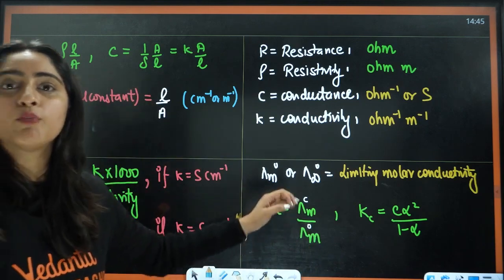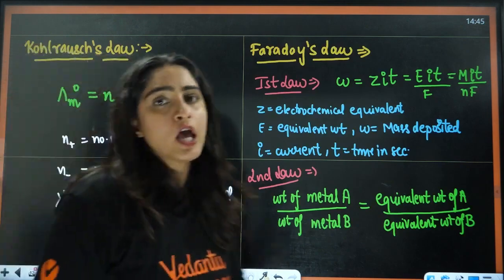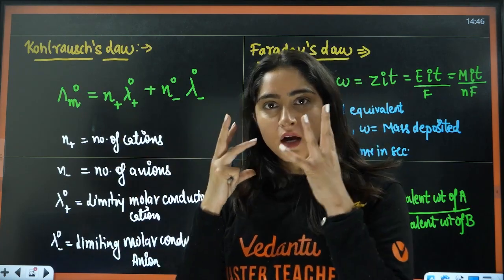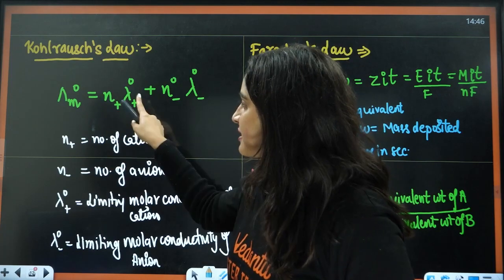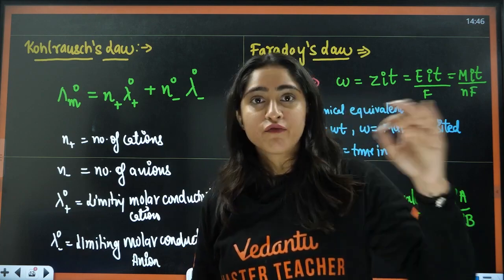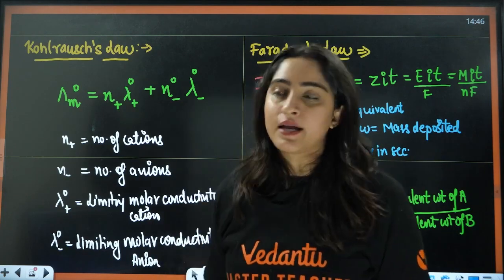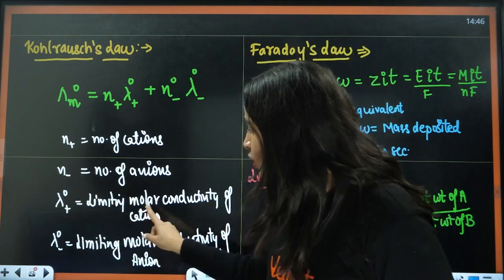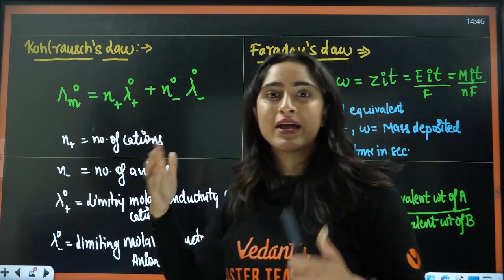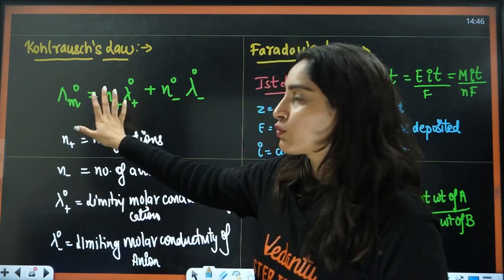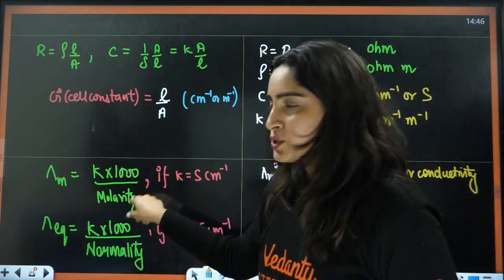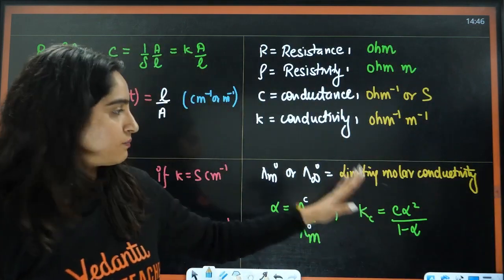For calculating the molar conductivity at infinite dilution, there are a few things we can do. For that, we have Kohlrausch's law. This simply says that if you have an ionic compound, the molar conductivity at infinite dilution equals the sum of the molar conductivities of the individual ions — that is N times the limiting molar conductivity of the cation plus N times the limiting molar conductivity of the anion. This N represents the number of cations and anions that dissociate. Firstly, they will ask you to calculate limiting molar conductivity, then molar conductivity at concentration C, and then degree of dissociation and dissociation constant.